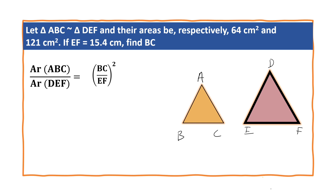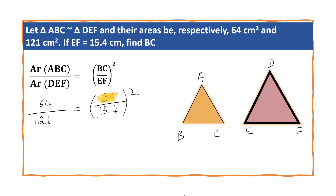Now let us substitute the values. Area of triangle ABC is 64 cm², area of triangle DEF is 121 cm². We have to find BC, and EF is 15.4, whole squared. To find BC², cross multiply: BC² is equal to 64 into (15.4)² upon 121.